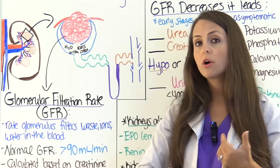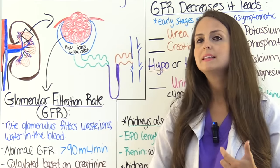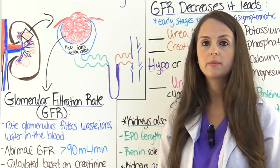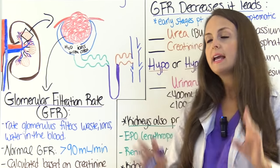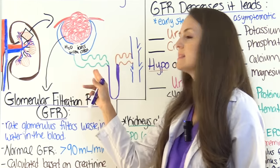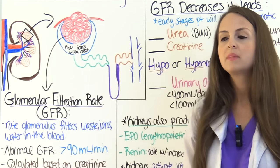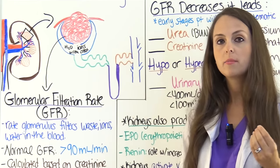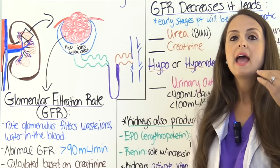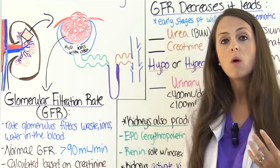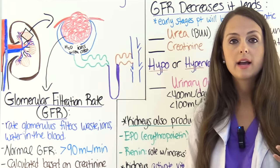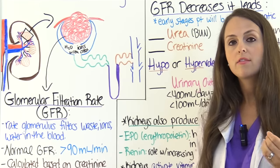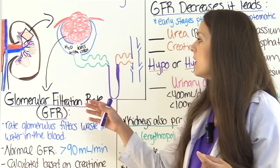The renal tubules will reabsorb the amounts of water needed, a little bit of urea, and the electrolytes the body needs. However, they do not reabsorb creatinine. Creatinine is solely filtered by the glomerulus from the bloodstream and is not reabsorbed in the renal tubule. That's why we care so much about creatinine when we measure it in the urine and blood — it gives us a good indicator of how well the glomerulus is filtering.